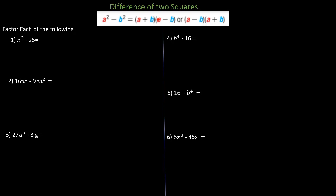This is the difference of two squares. a squared minus b squared equals a plus b times a minus b, or a minus b times a plus b — the order doesn't matter.